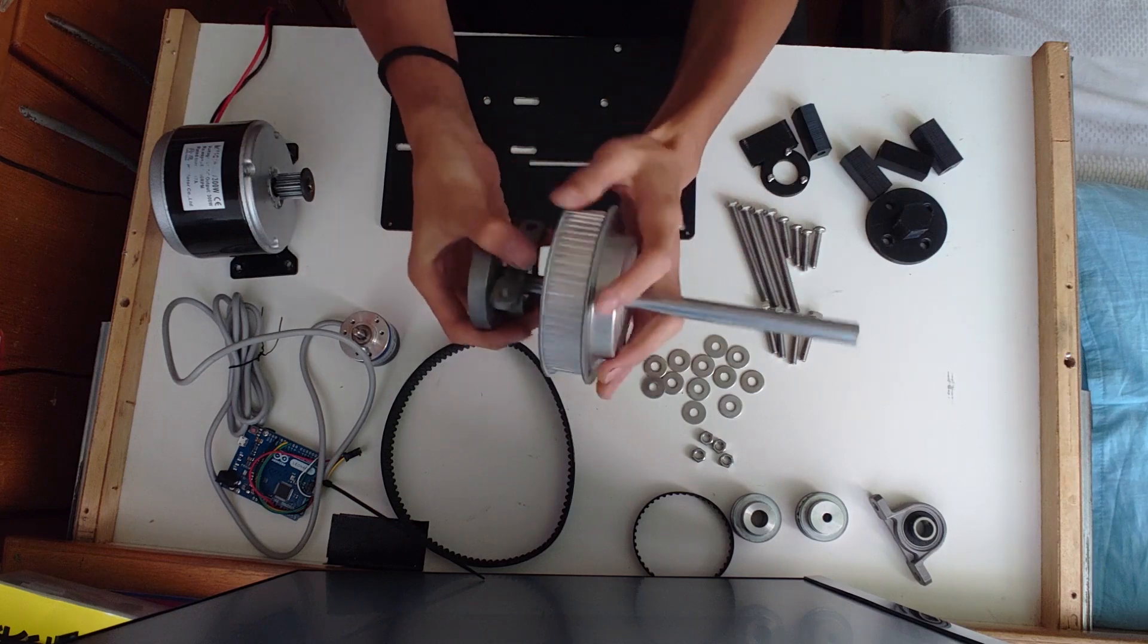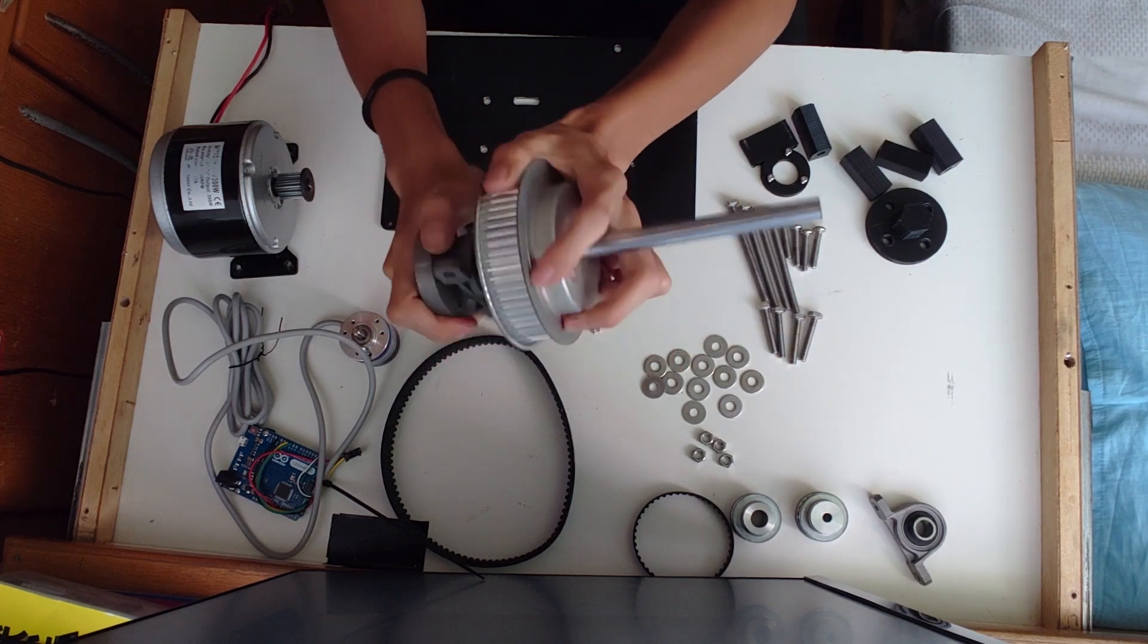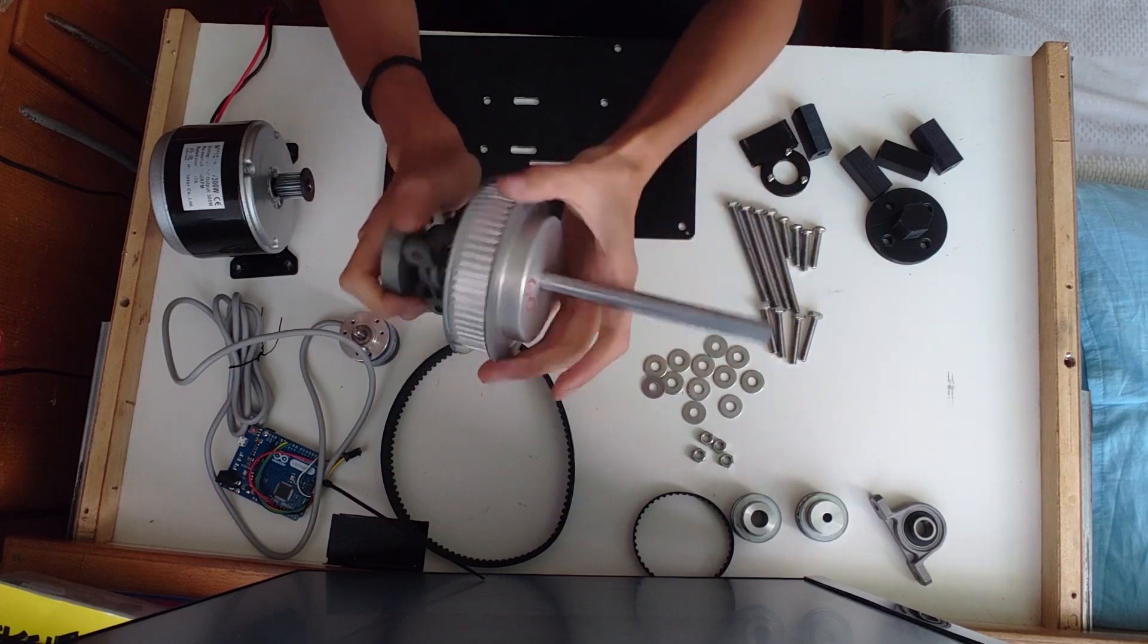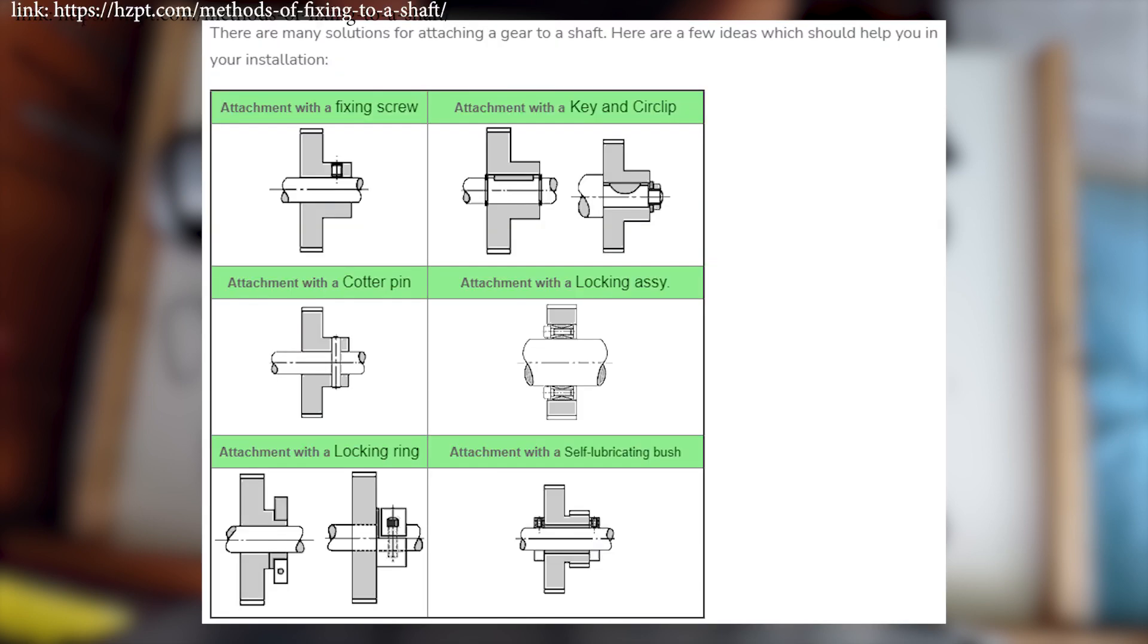Last but not least is the shaft assembly. It is a 12mm shaft with a 5M60T timing pulley and a DIY hub on it. The timing pulley and the hub should be fixed to the shaft. Here I use fixing screws and some thread lock to put them together.